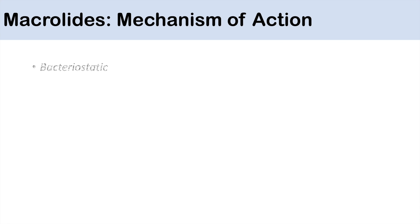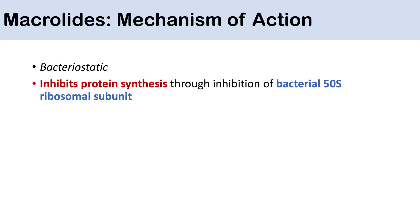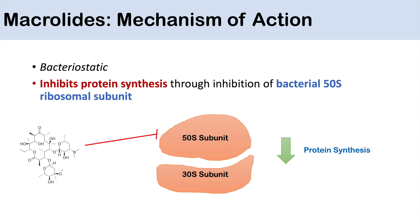How do macrolides work? What is their mechanism of action? They are all bacteriostatic, and they inhibit protein synthesis through inhibition of bacterial 50S ribosomal subunits — the same mechanism of action as clindamycin. They bind to and inhibit the bacterial 50S ribosomal subunit, leading to decreased protein synthesis and bacteriostasis.